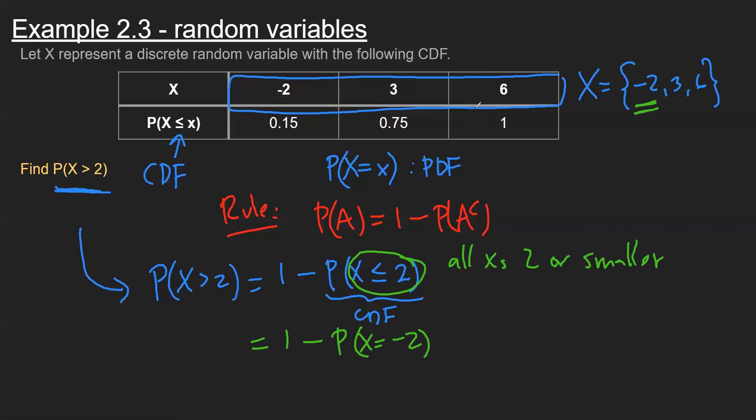Since there are no values smaller than in this particular problem, I'm going to note that since negative two is the smallest value, the chance that X is less than or equal to negative two is identical to the chance that X equals negative two.